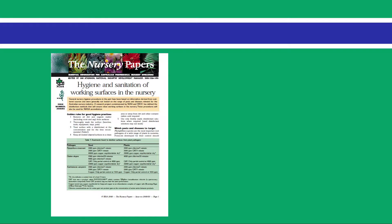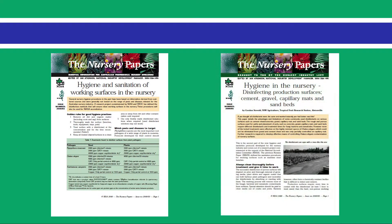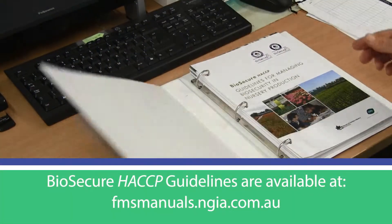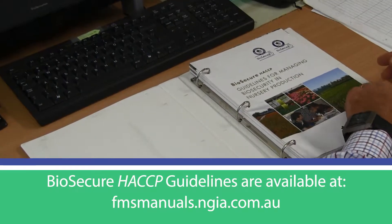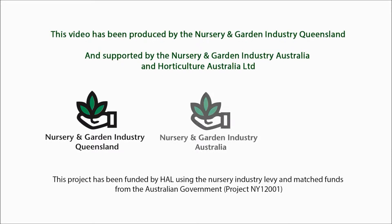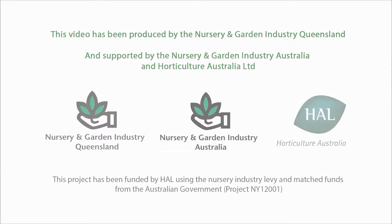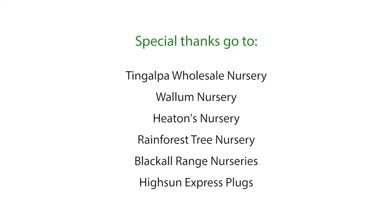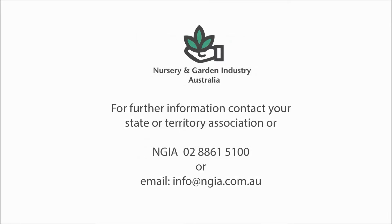A range of publications and resources on nursery hygiene and sanitation are available on the NGIA website. More information can be found in the Biosecure HACCP guidelines. This video has been produced by the Nursery and Garden Industry Queensland, and supported by the Nursery and Garden Industry Australia and Horticulture Australia Limited. For further information, contact your State or Territory Association or NGIA.